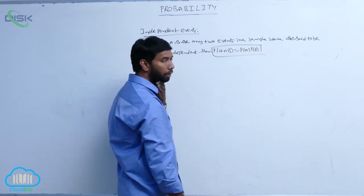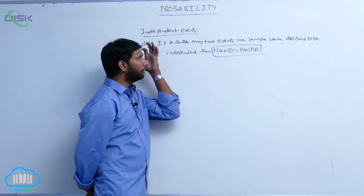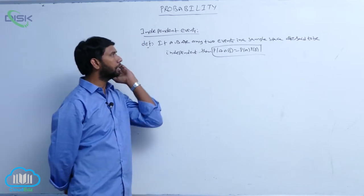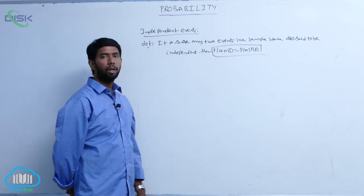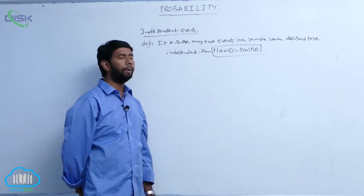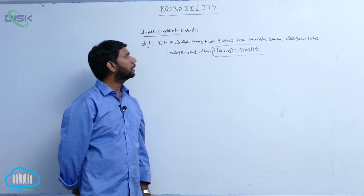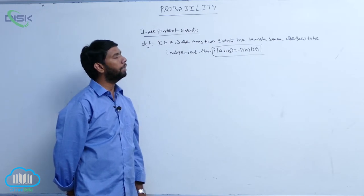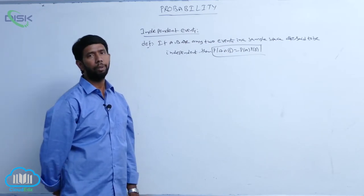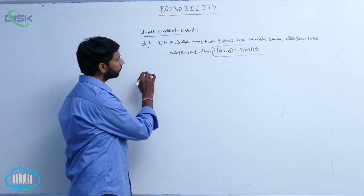If A, B are two events in a sample space and are said to be independent events, then P of A intersection B is equal to P of A into P of B.